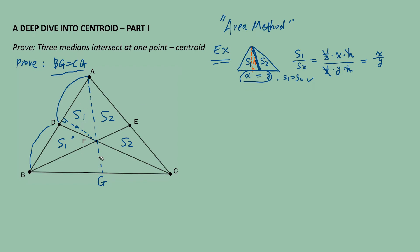We have another two triangles at the bottom, and we want to prove BG is equal to CG. These two triangles share a common altitude from point F towards side BGC. Therefore, if we can prove these two triangles have the same area, since they have the same altitude, they must also have equal bases, which means BG is equal to CG. So this question becomes: how can we prove S3 is equal to S4?